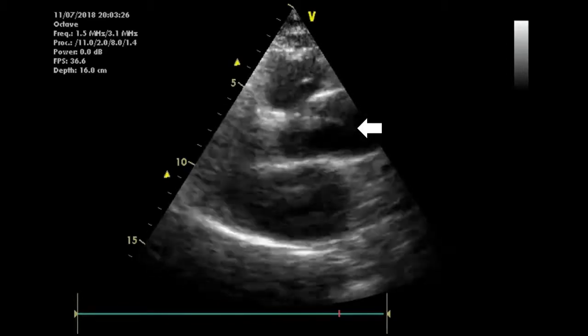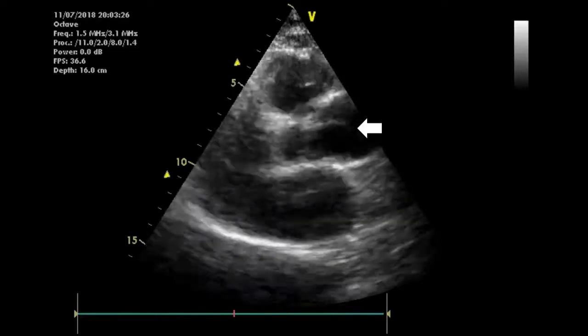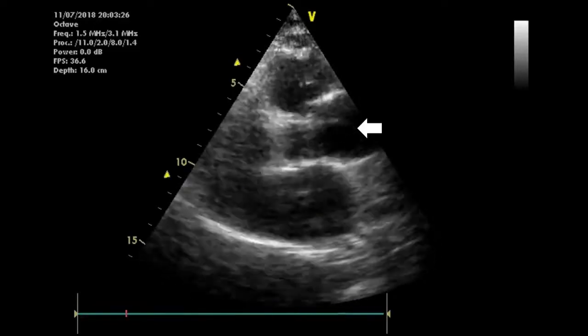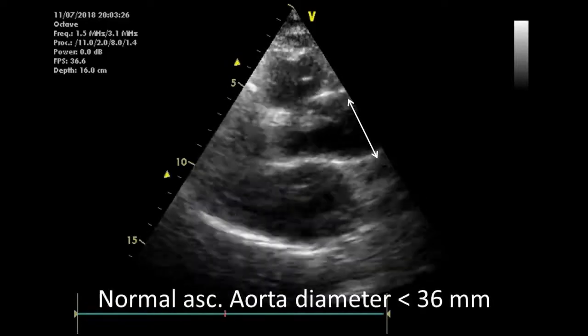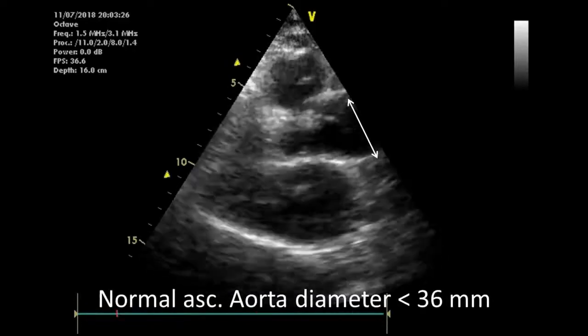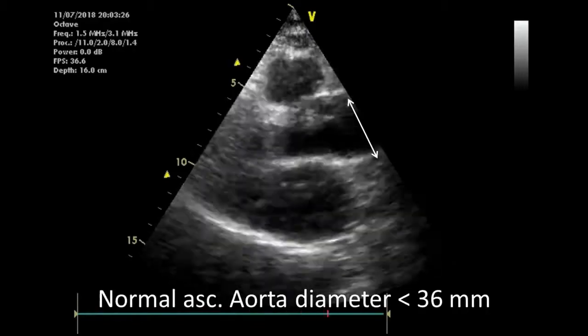Sometimes there will also be an exit tear back into the lumen, and then you can see a jet of blood flowing back into the lumen. In most cases, you'll also notice a dilated aorta. Normal ascending aortic diameter should be less than 36 millimeters. You can measure it using the caliper.